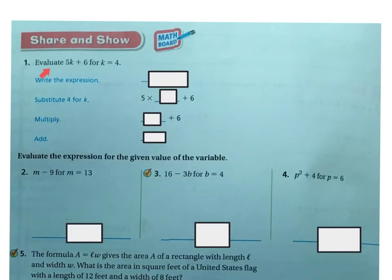Let's do a few more. Evaluate 5K plus 6 when K is 4. First we write the expression: 5K plus 6, and then we substitute 4 for K. So now we have 5 times 4 plus 6. What do we do first? We multiply. 5 times 4 is 20, plus 6 is 26.